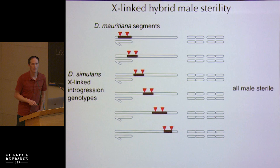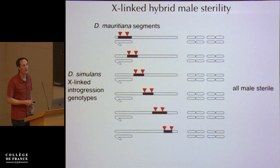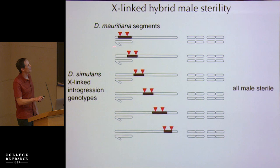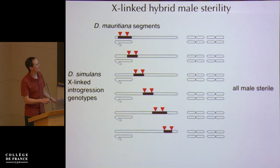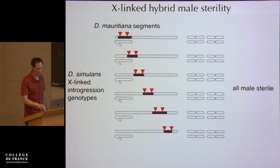To get at this, we've been working on the X-linked part of it — trying to understand the genetic basis, the genes on the X chromosome, that when moved from *mauritiana* into simulans cause male sterility. To do this, we've generated introgression genotypes where we backcross segments of the X chromosome from *mauritiana* into a simulans background. We cover most of the euchromatic portion of the X with these, about six regions. All of these intervals cause males to be completely sterile.